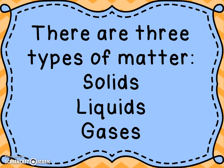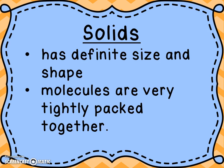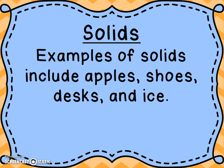There are three types of matter: solids, liquids, and gases. Solids have a definite size and a definite shape — it always stays the same. If you take a baseball and put it on the table, it's going to be the same size and shape as if you put it in a glass of water. In a solid, the molecules are very tightly packed together and they can't move at all. It's a good thing they can't move — if the molecules in your chair could move, you could end up sitting on the floor. Some examples of solids include apples, shoes, desks, and ice.